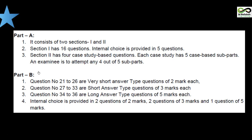Part B is of higher marks — 2, 3, and 5 marks questions. For both class 10th and 12th, the pattern is the same: 36 questions in all, with marks of 1, 2, 3, and 5. Internal choices are given in 2 questions of 2 marks, 2 questions of 3 marks, and 1 question of 5 marks. Please download the sample paper and marking scheme for whatever subject you have opted and go through them — this is very important.